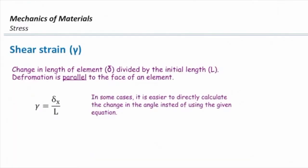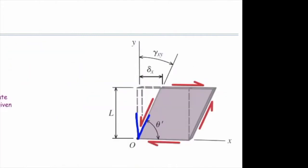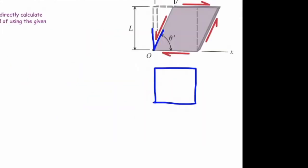But sometimes, instead of using that equation, we directly determine how much is change in the angle. Remember that shear strain is actually this angle. How much would be shear strain for this element? That is zero, because there's not any change. How much would be shear strain for this element? For this one, this is the shear strain.